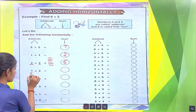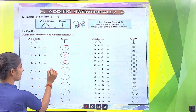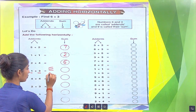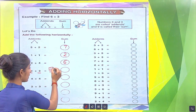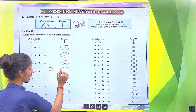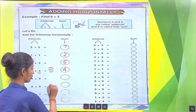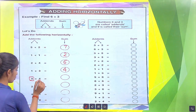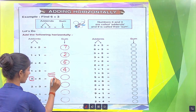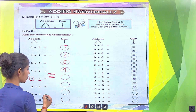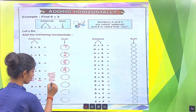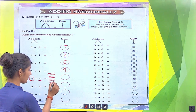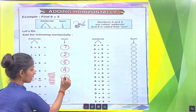Similarly, there is 1, so we draw only 1 line. There are 3, so we draw 3 lines: 1, 2, 3. How many total lines? We calculate: 1, 2, 3, 4. There are total 4 lines. So we put here 4. Next, there are 4, so we draw 4 lines: 1, 2, 3, 4. This is also 4, so we draw 4 more lines: 1, 2, 3, 4. Calculate the total lines: 1, 2, 3, 4, 5, 6, 7, 8. We put here 8.